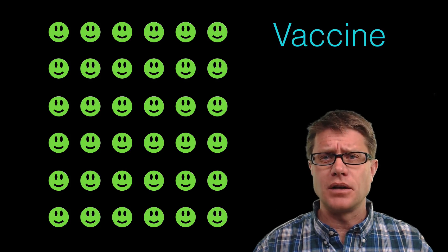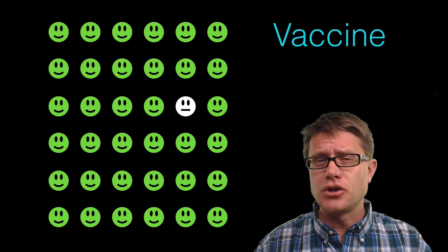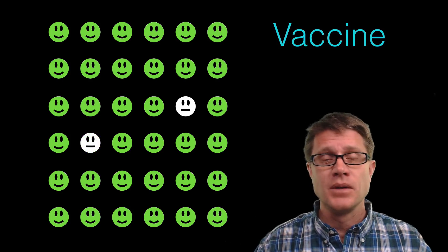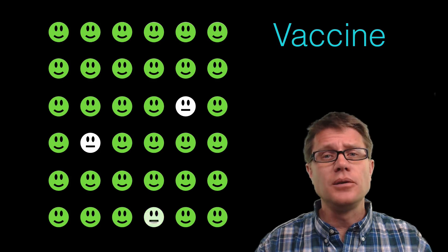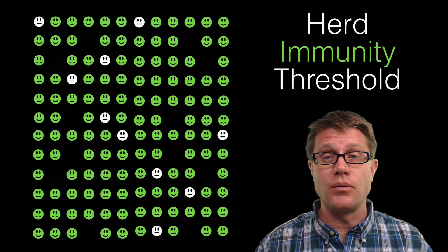But we cannot vaccinate everybody. Because it is a voluntary process to get vaccinated. Some people do not want to. You should not get like a measles vaccine if you are a baby or you are a pregnant female. And then as you get older you may lose some of this immunity. So not everybody can be vaccinated. It just simply does not work that way.